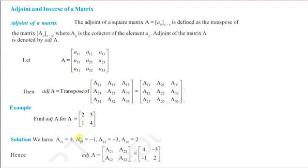A12 is the cofactor of the second element of the first row. The sum of suffixes 1 and 2 is odd, so the sign is negative. Removing the first row and second column, we are left with 1, so A12 = −1. Similarly, A21 corresponds to element 1; removing the second row and first column leaves 3, and since the sign is negative, A21 = −3.